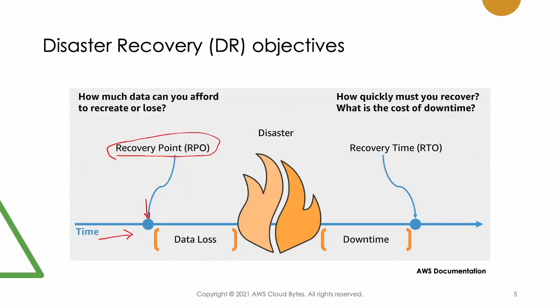What are the objectives of disaster recovery? When we talk about disaster recovery, there is a business impact when something like that happens. We need to have a quantitative business impact analysis for disruptions, and identify the internal as well as external customers impacted. There are two key metrics: RPO and RTO.